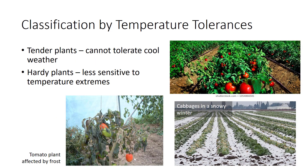How plants handle temperature is also used to classify and name plants. Tender plants, such as tomatoes and peppers, cannot tolerate cool weather — that's why they are planted after the last frost in vegetable gardens. Hardy plants, such as broccoli and chrysanthemums, are less sensitive to temperature extremes than tender plants. Broccoli, carrots, and cabbage are cool season vegetables.